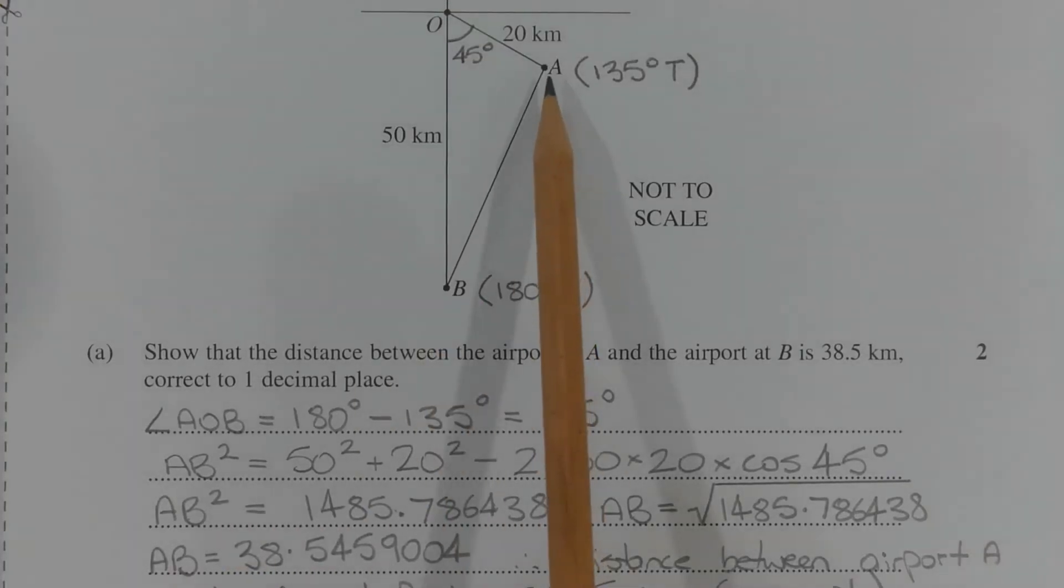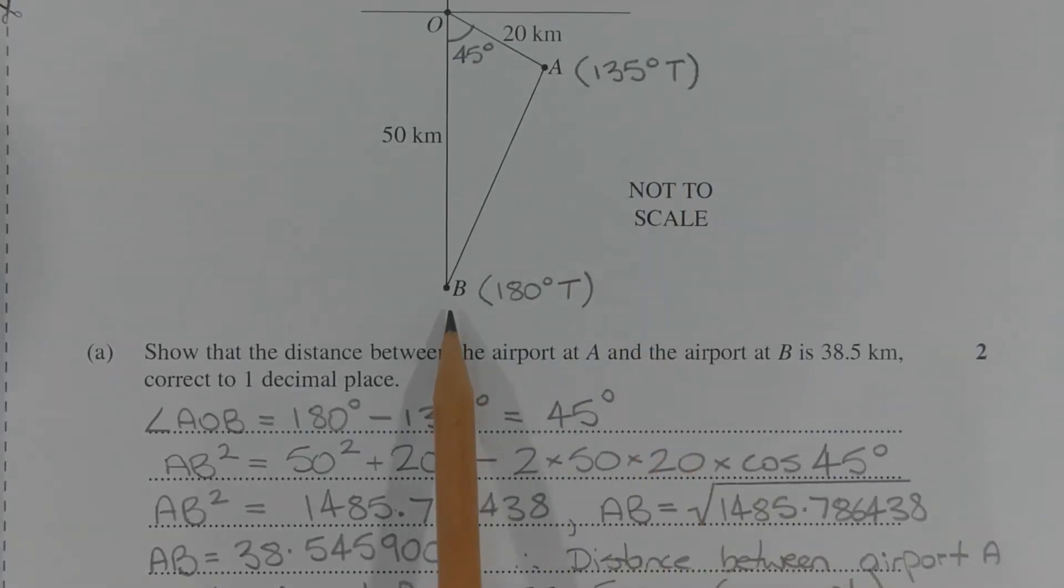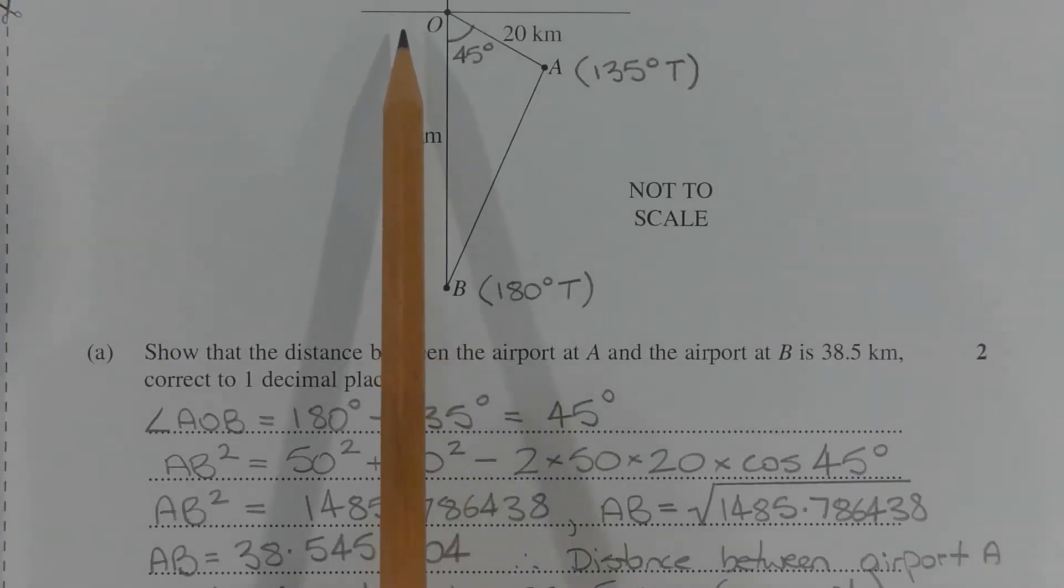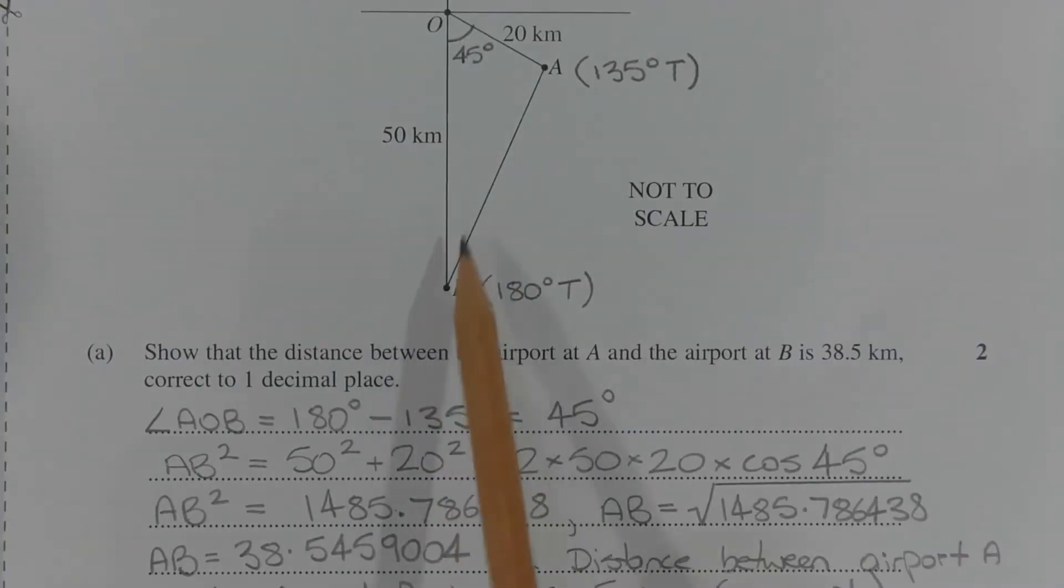The true bearing of the airport at A is 135 degrees, and the true bearing of the airport at B is 180 degrees, since the airport at B is directly south of O. Now, side AB in triangle OAB represents the distance between the airport at A and the airport at B.